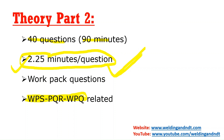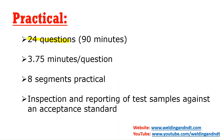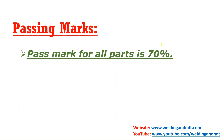Theory Part 2 questions are called work pack questions, revolving around WPS, PQR, and WPQ. They will give you some WPS, PQR, or WPQ and may also give some drawings — you have to review those and answer the questions. In Practical, they will give you 24 questions with 90 minutes, meaning 3.75 minutes per question. You have to identify defects, check the acceptance criteria, and say whether the defect is accepted or rejected. Eight segments will be provided.